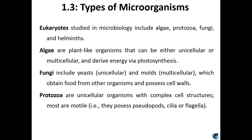Eukaryotes include algae, protozoa, fungi, and helminths. 'Eu' means 'true' and 'karyon' means 'nucleus,' so eukaryotes do have a nucleus. Algae are plant-like, have chlorophyll, and reproduce via photosynthesis; they can be unicellular or multicellular. Fungi can be unicellular — like yeasts — or multicellular like molds; they obtain food from other organisms and possess cell walls. Protozoa are all unicellular but have nuclei and complex cell structures.